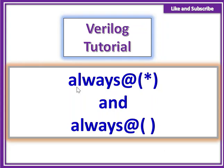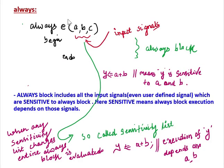Hello everyone. Today I will cover these two concepts. Though I have already covered the always block concept in one of my video tutorials and that video is available in the playlist. If we write like this: always @(abc) begin...end, whatever we write inside the parenthesis is called input signals, or we can say these are the sensitivity list. And this is the always block.